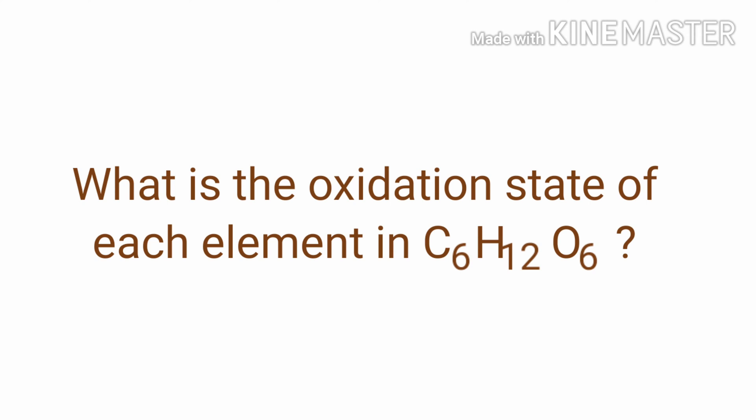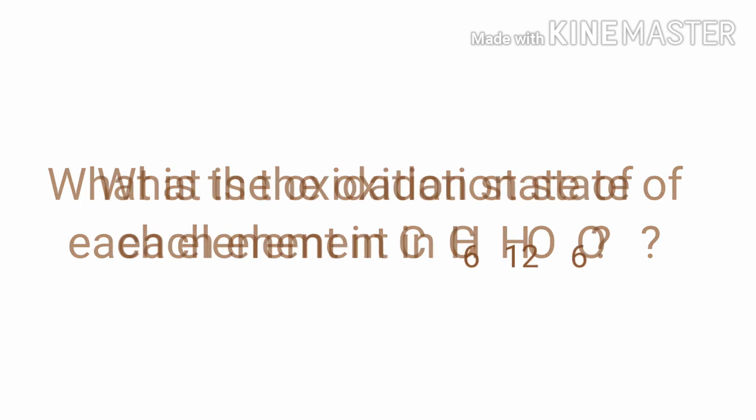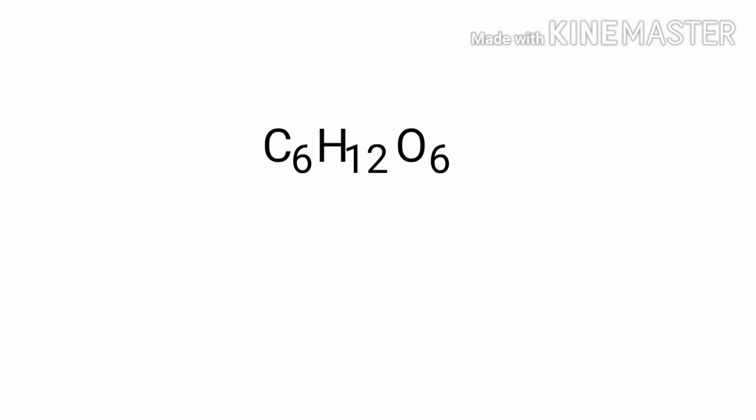What is the oxidation state of each element in C6H12O6? C6H12O6 is a molecular compound with overall oxidation number 0. Therefore, we know that the sum of the oxidation numbers of the atoms is equal to 0.